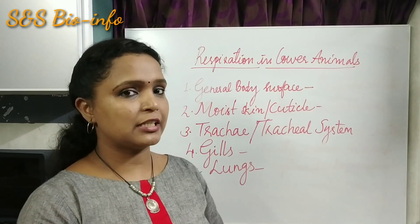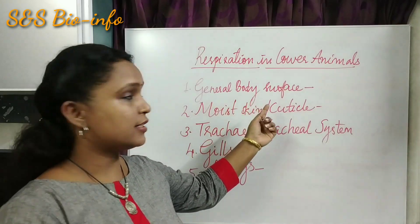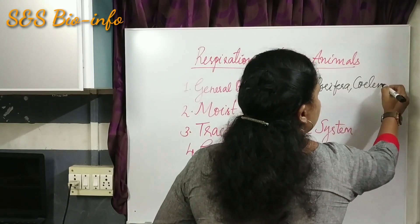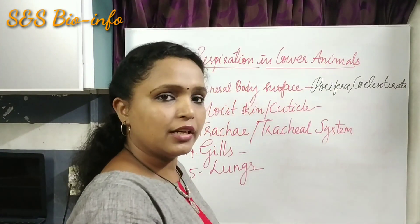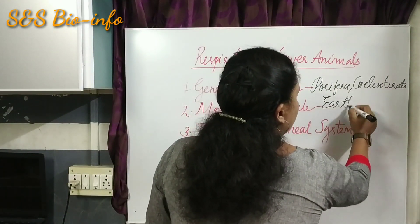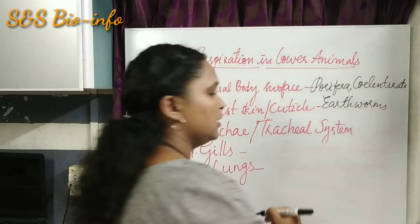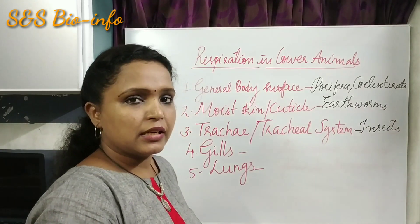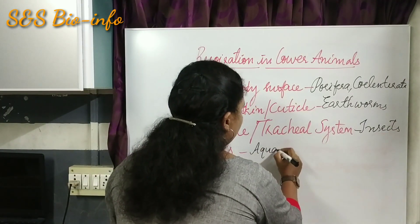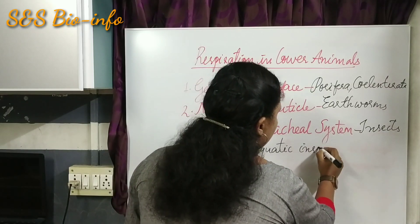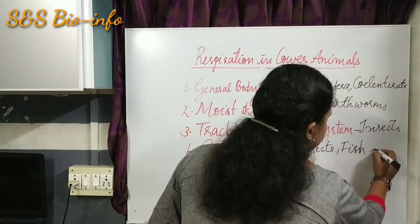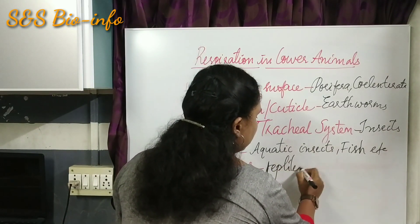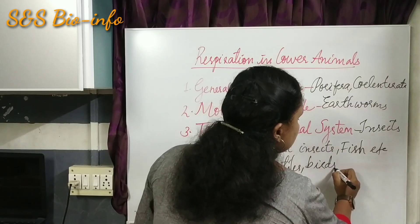Now let's recall the names of the respiratory organs of some animals. General body surface: porifera and coelenterata. Moist skin: earthworms. Trachea or tracheal system: insects. Gills: aquatic animals like aquatic arthropods, aquatic insects, and fish. Lungs: all land vertebrates like reptiles, birds, and mammals.